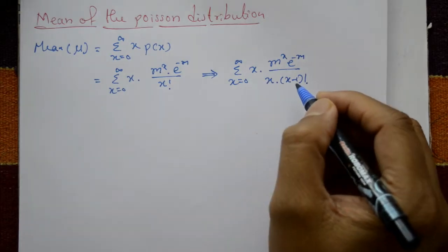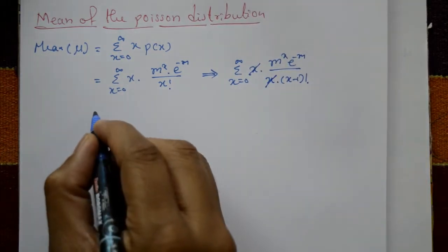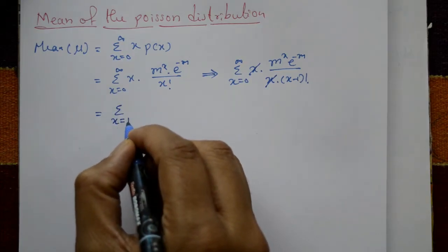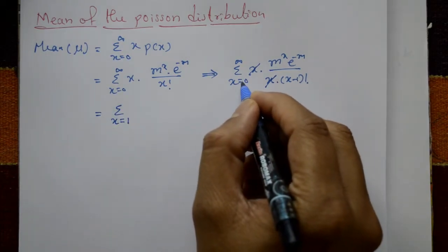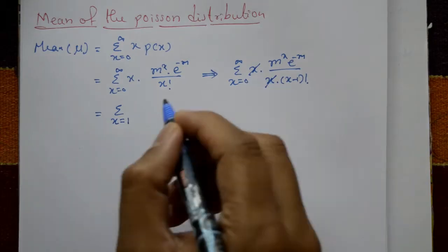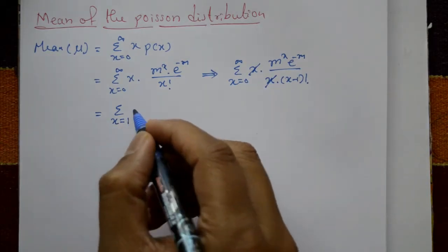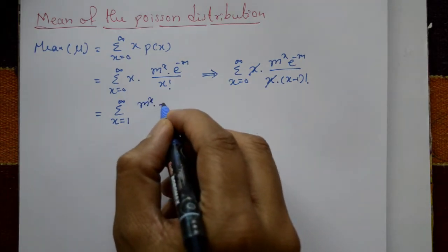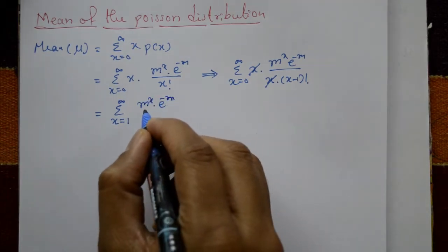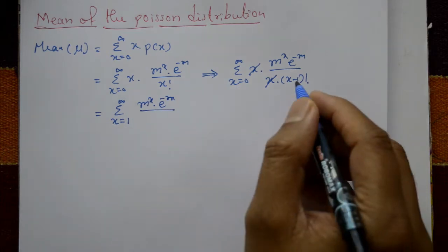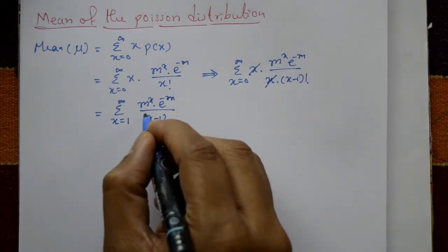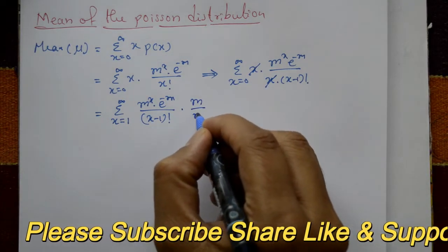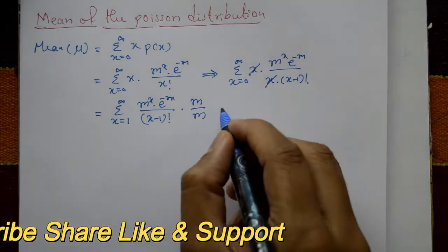After canceling x from numerator and denominator, the summation index shifts from starting at x equals 0 to starting at x equals 1. The expression becomes summation from x equals 1 to infinity of m raised to x, times e raised to minus m, divided by (x minus 1) factorial.